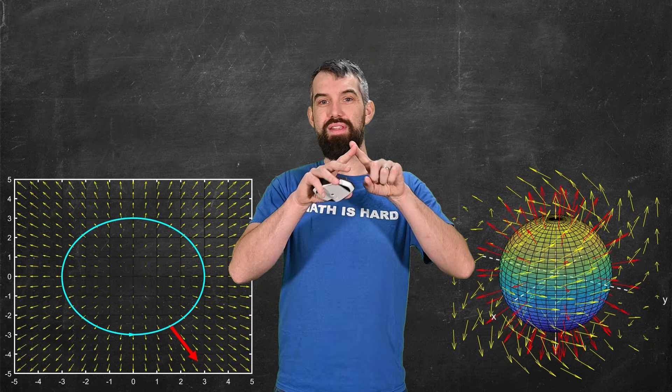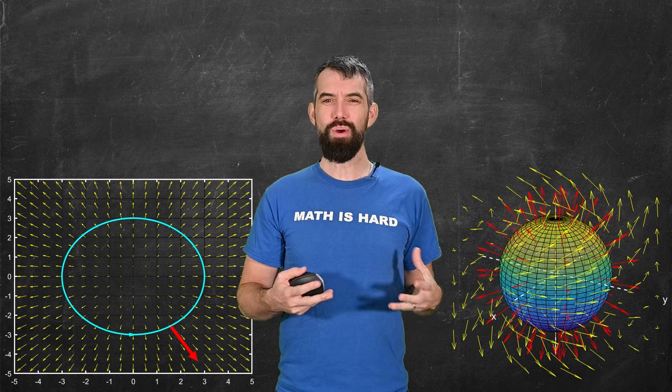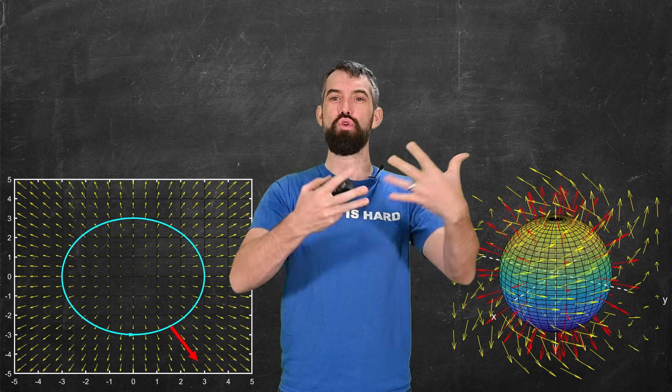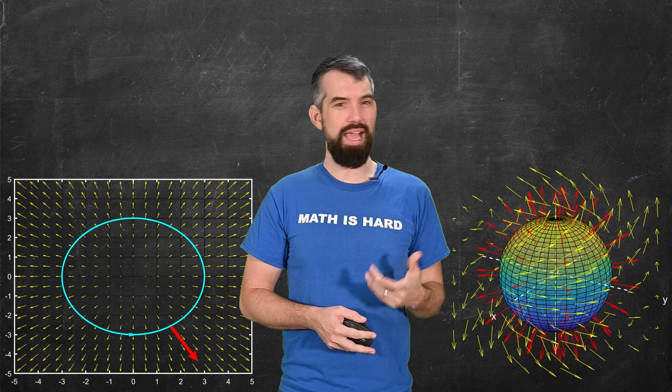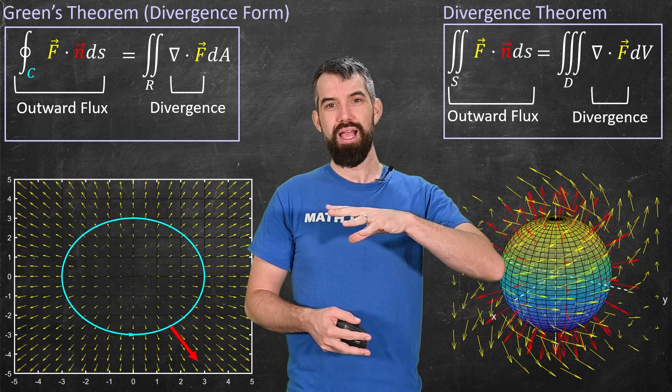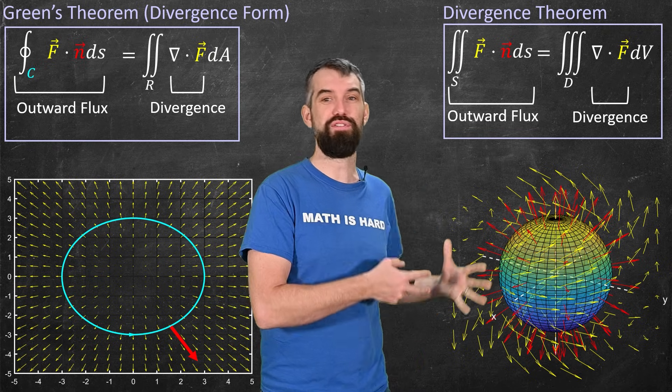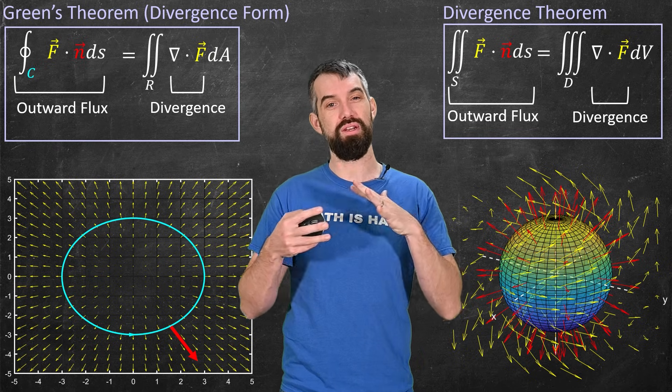Like, if I have a vector field and have like a closed curve in two dimensions, or like a closed surface in three dimensions, I could ask, like, what's the tendency for the vector field to cross over this region? And indeed, there's really powerful theorems, Green's theorem and divergence theorem, that we're going to study that relate to these interactions between vector fields and curves and vector fields and surfaces.